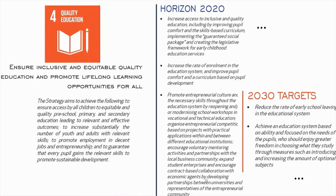Strategy Goal No. 4 — Quality Education — aims to ensure inclusive and equitable quality education and promote lifelong learning opportunities for all. The Strategy aims to ensure access by all children to equitable and quality preschool, primary and secondary education leading to relevant and effective outcomes, to increase substantially the number of youth and adults with relevant skills, to promote employment in decent jobs and entrepreneurship, and to guarantee that every pupil gains the relevant skills to promote sustainable development.